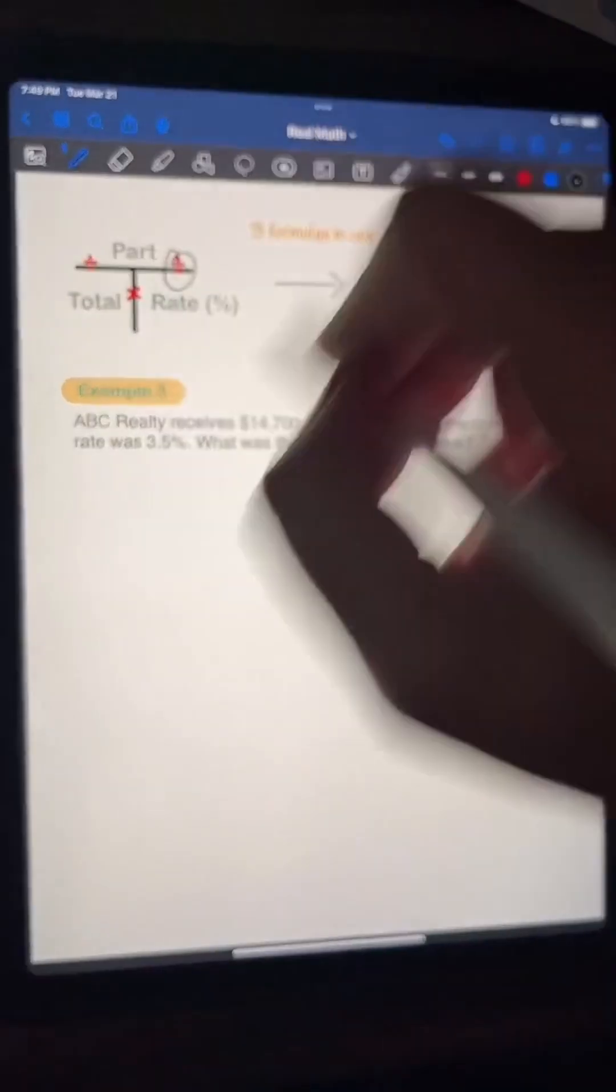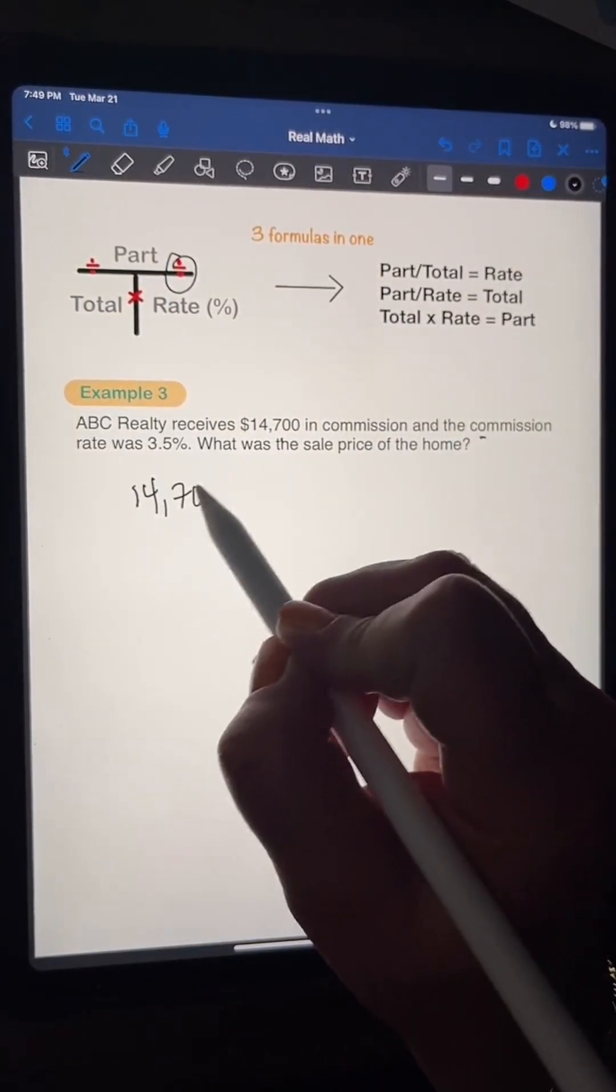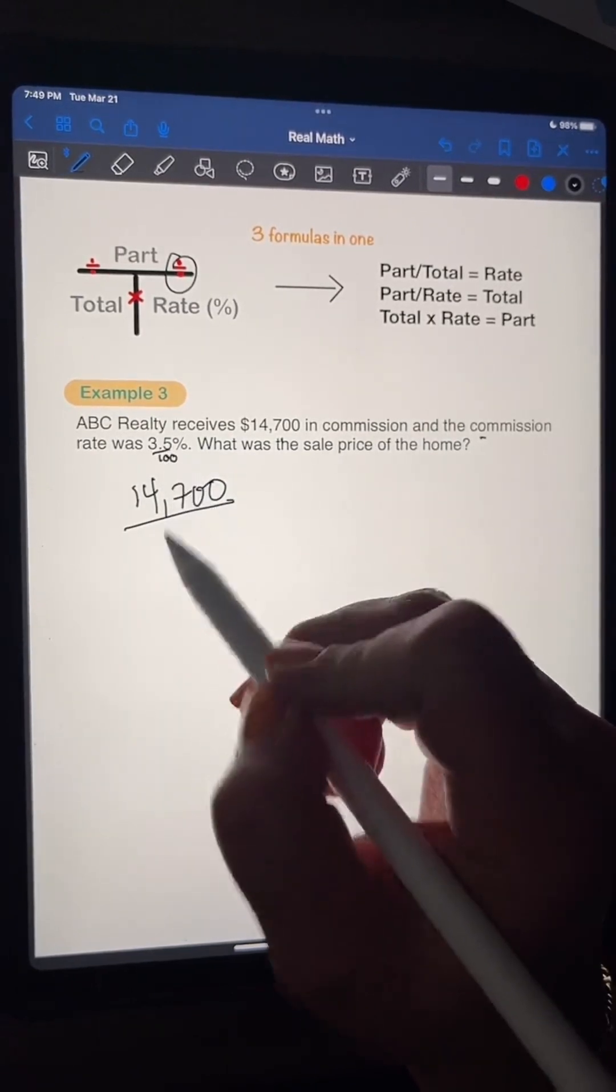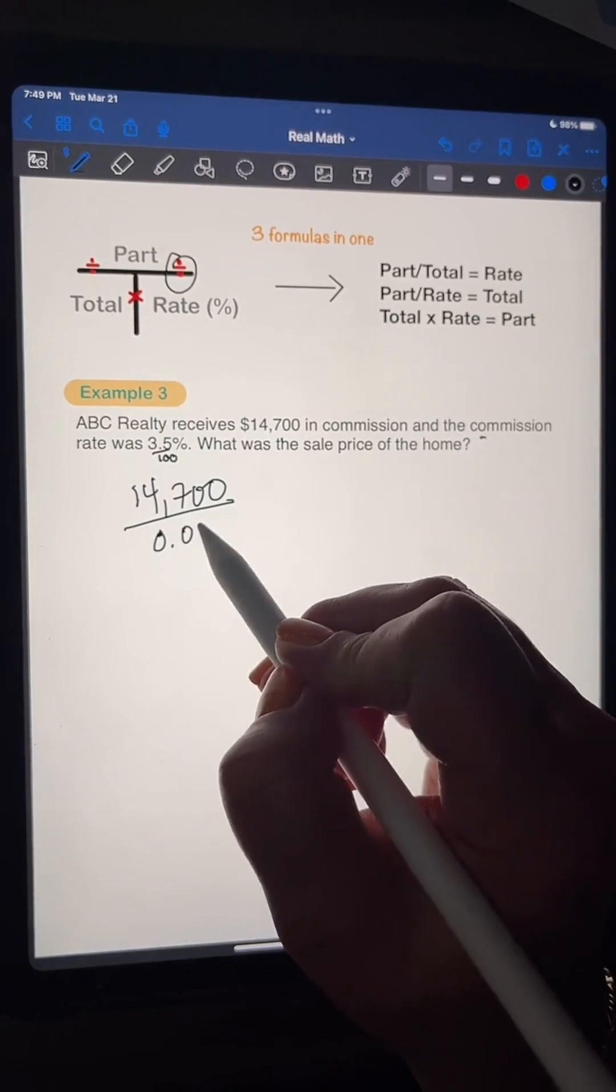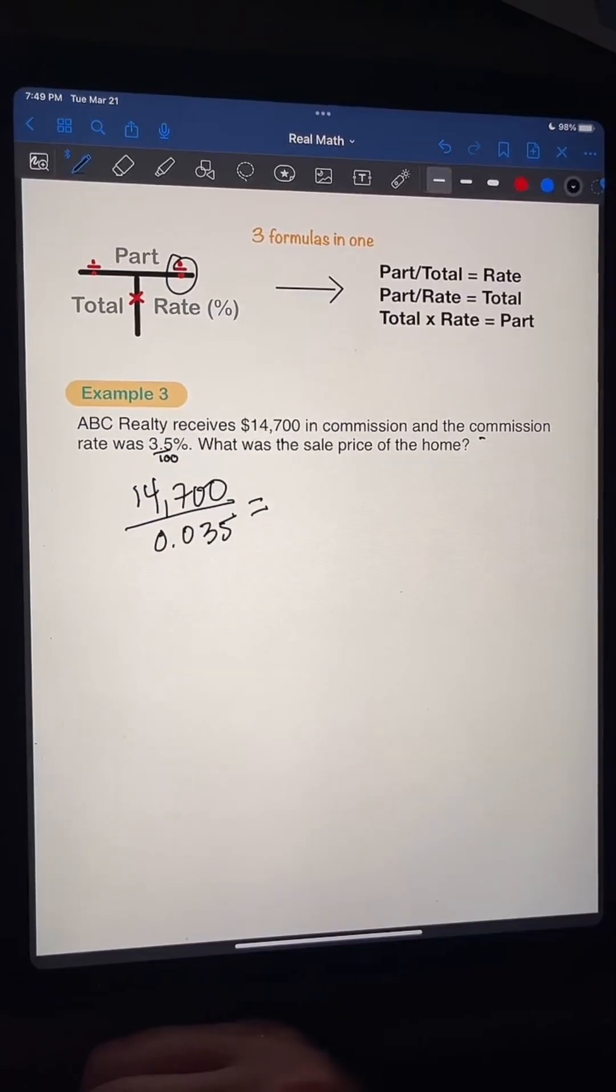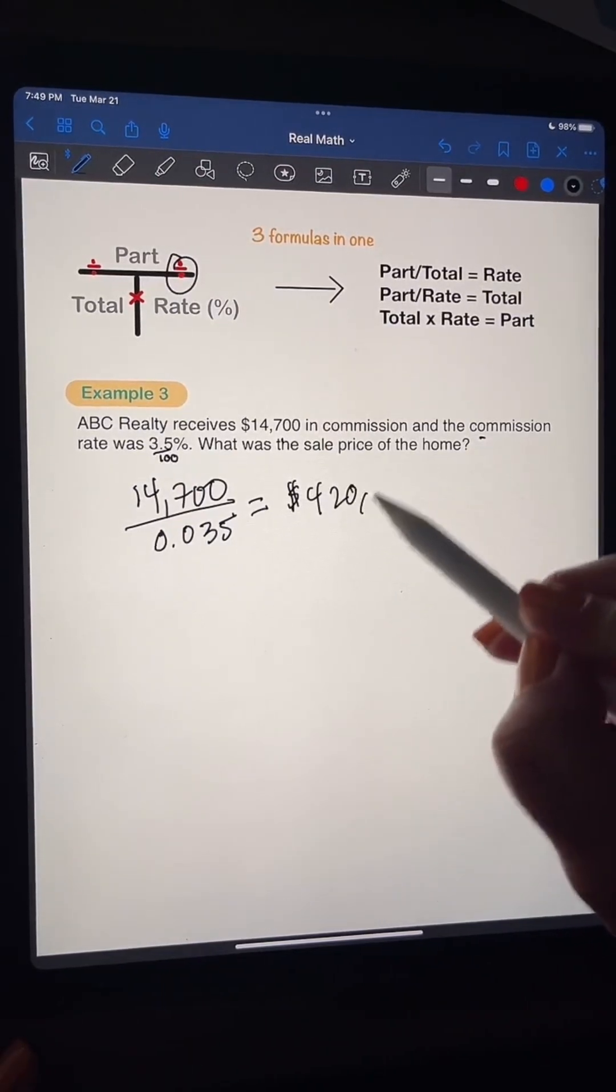Do you see how easy? I mean, like, it's like a little circle. It's perfect. So we're going to say $14,700 divided by, and then I'm going to make this a decimal. So it's going to be 0.035. $14,700 divided by 0.035 is going to give us a sale price of a home of $420,000.